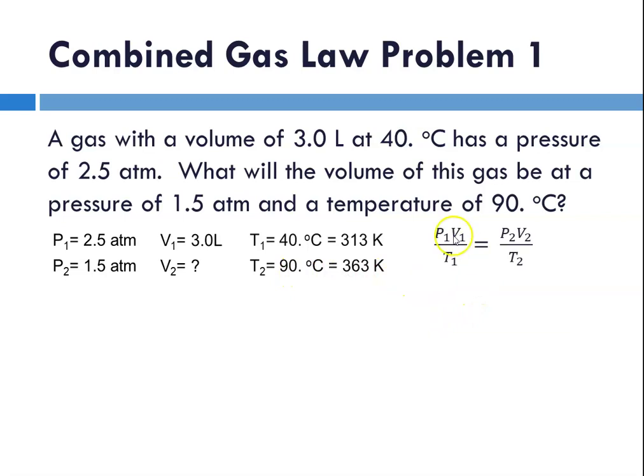And our equation P1 V1 over T1 equals P2 V2 over T2. That's a lot of variables. Because we've got six different variables going on, it's incredibly important to identify the variables so that when you plug them in, they go in the right place.